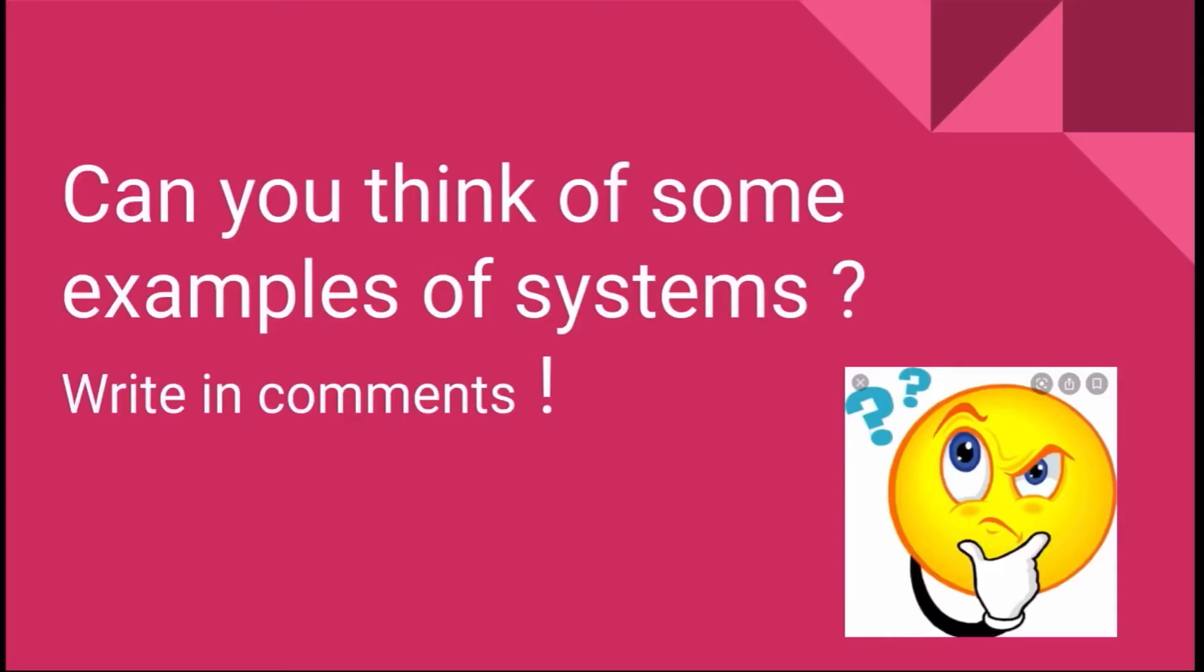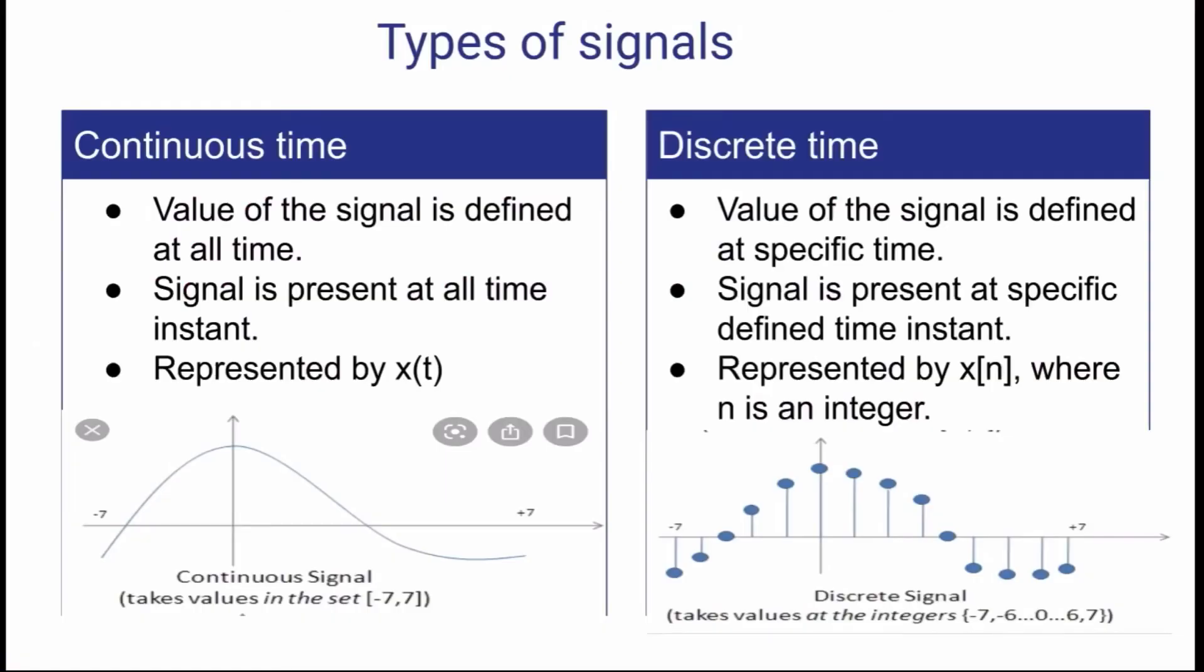So basically, can you think of some examples of systems? I have told you three examples. So you think of some other system that the input signal is taking something, processing and then output. So give examples of some systems that you know from our daily life. You can write in comments.